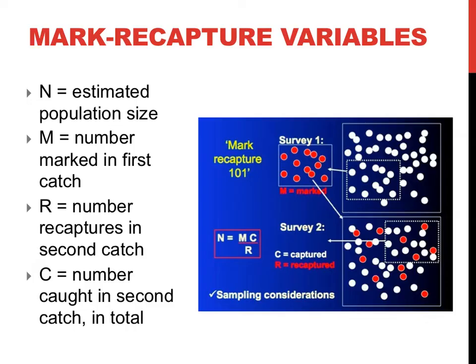At the top of this page, the formula to calculate N, your total estimated population size, is provided. There are three pieces of information that you need to estimate this. M, the number of individuals that you mark in your first capture sample. C, the number of individuals that you catch in your second sampling. And R, the number of individuals that you caught in your first sampling that you re-caught in your second sampling.